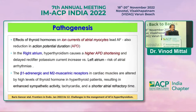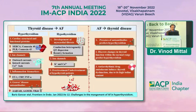Excess thyroid hormones lead to altered ionic currents in atrial myocytes, decreasing atrial action potential duration and atrial refractory time, causing more frequent atrial beating. There is also alteration in beta-1 adrenergic and M2 muscarinic receptors present in the cardiac muscles.